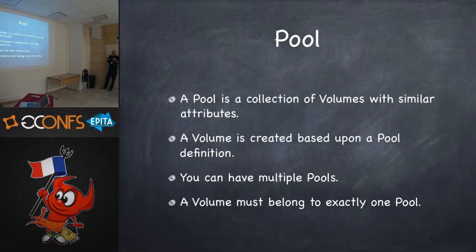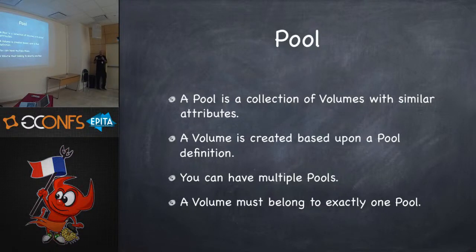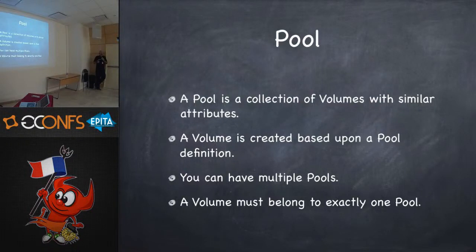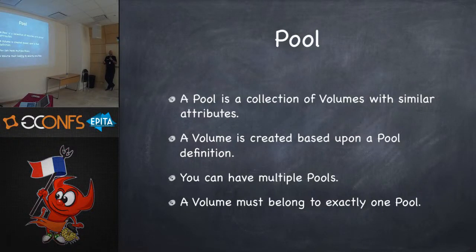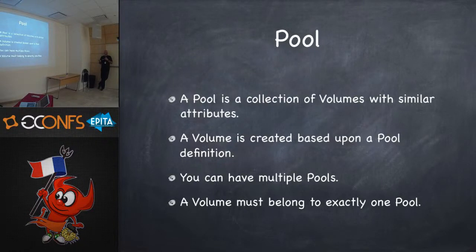A pool is a collection of tapes — like all your full backup tapes on one shelf, and incremental backup tapes on another. A pool is a set of specifications: for example, this backup will be retained for three years. Every volume created based on that pool shares the same characteristics at creation time. After a volume has expired, it can be put back into the scratch pool and then be used by any other pool when it needs a new volume.